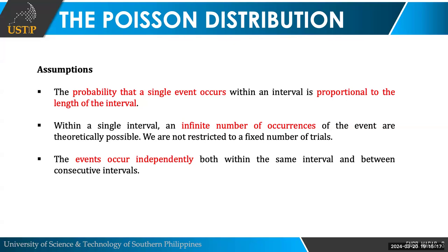That's the first assumption: if you increase the length of interval, the probability that that certain event occurs also increases. Second one, within a single interval, an infinite number of occurrences of the event are theoretically possible. We are not restricted to a fixed number of trials, just like your binomial distribution. Again, in this one hour, it's possible class, that the number of cars that will pass by within an hour is infinite. It can be very large and it is infinite. You can calculate it for your Poisson distribution.